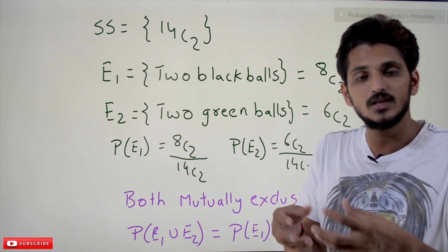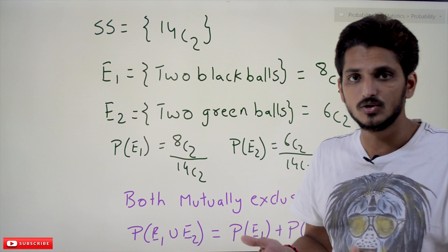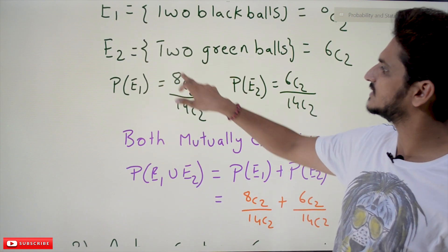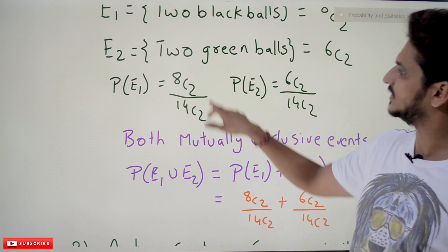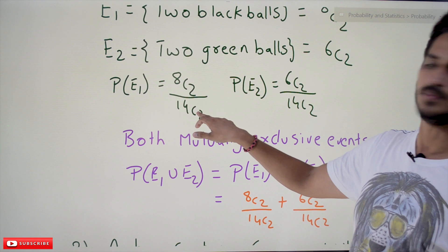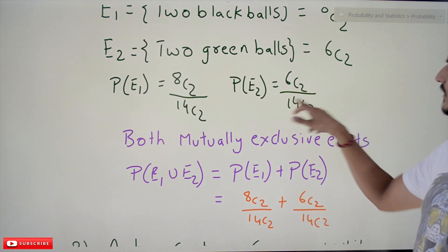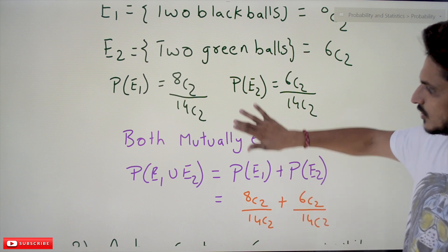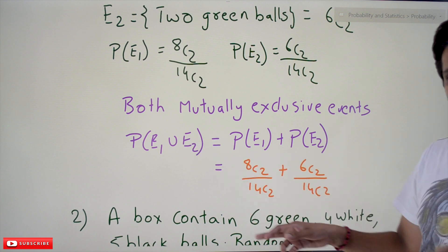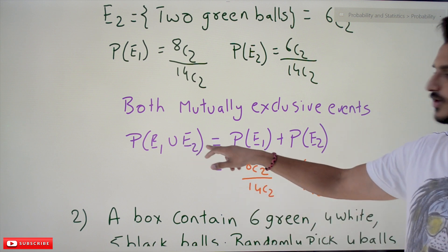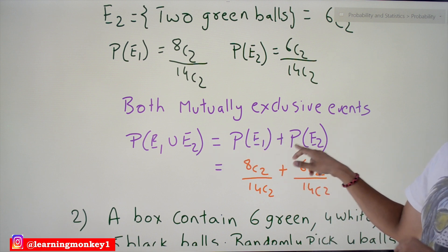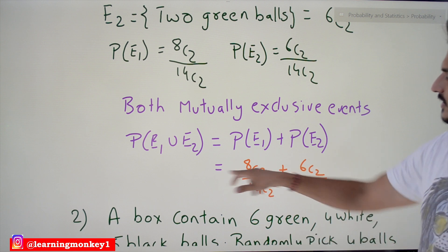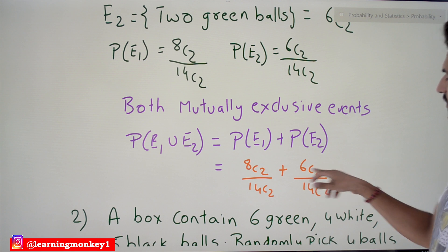Their intersection is empty — they are disjoint sets. Since they are mutually exclusive, P(E1) = 8C2 / 14C2 and P(E2) = 6C2 / 14C2. So P(E1 ∪ E2) = P(E1) + P(E2), which equals 8C2/14C2 + 6C2/14C2. This mutual exclusion rule was discussed in our previous classes. That is the final probability value for this problem.